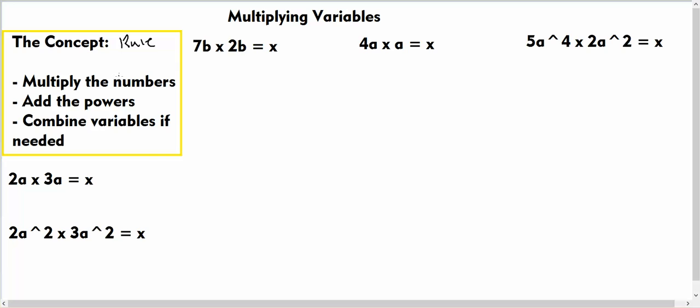Let's move on to the first equation here. Now here we have 2a multiplied by 3a. If we look at the concept, it says multiply the numbers, so 2 multiplied by 3 is 6. And add the powers - we know that there is 1a and another a here, so 1a plus 1a is equal to 2a. Therefore the answer is 6a².